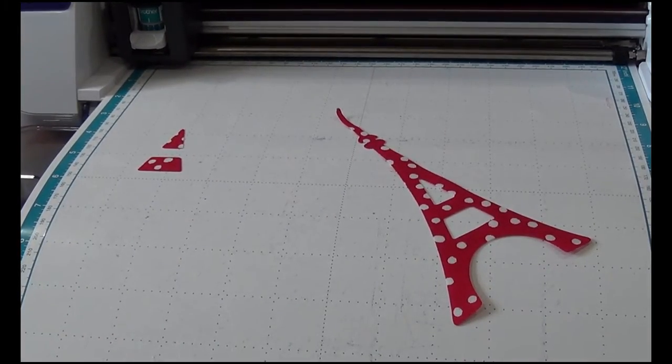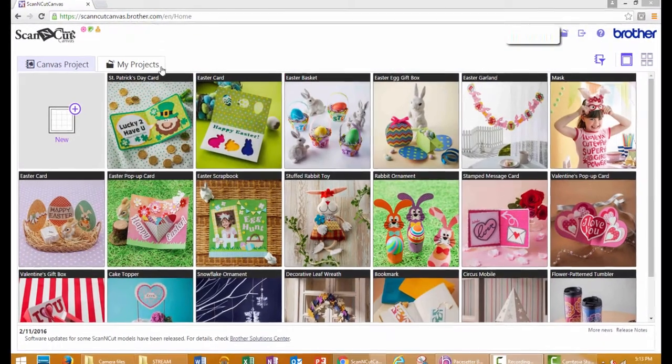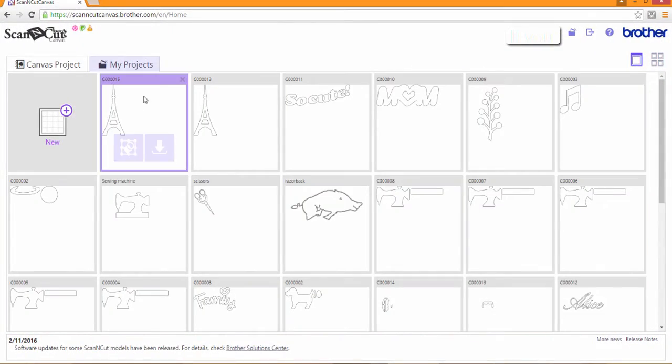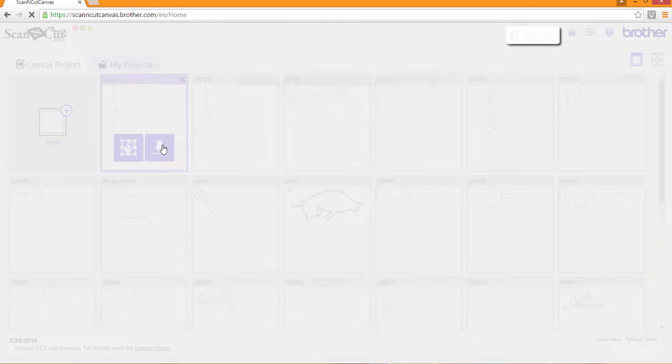Now let's go to our computer and log into our Scan and Cut Canvas. Click on My Projects. Locate the Eiffel Tower and press the Download button.